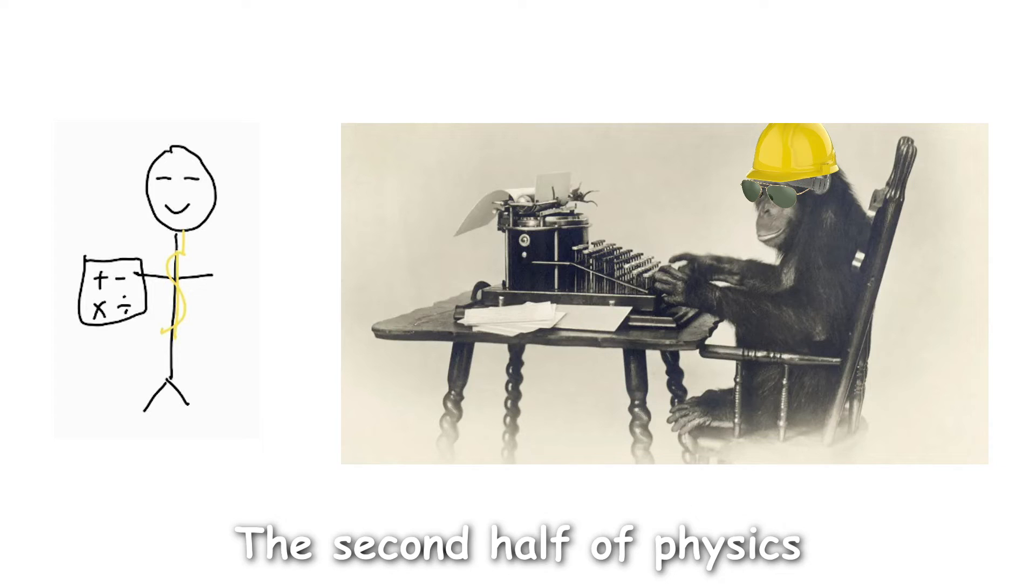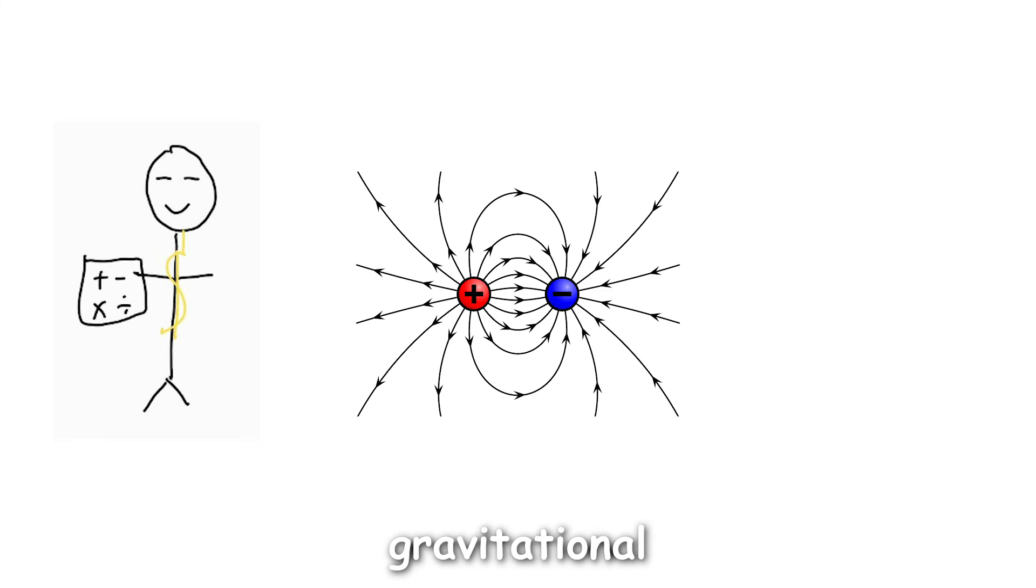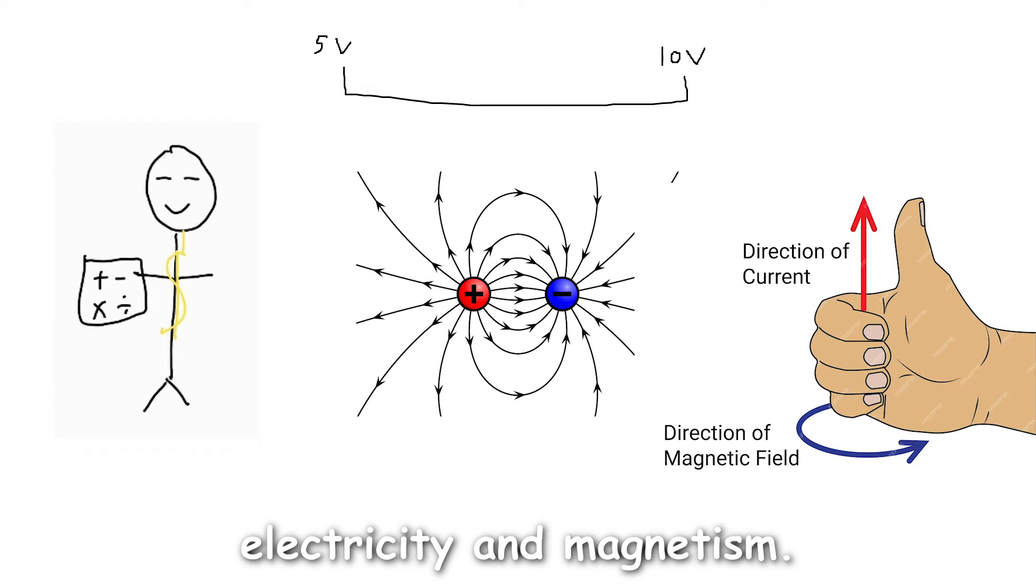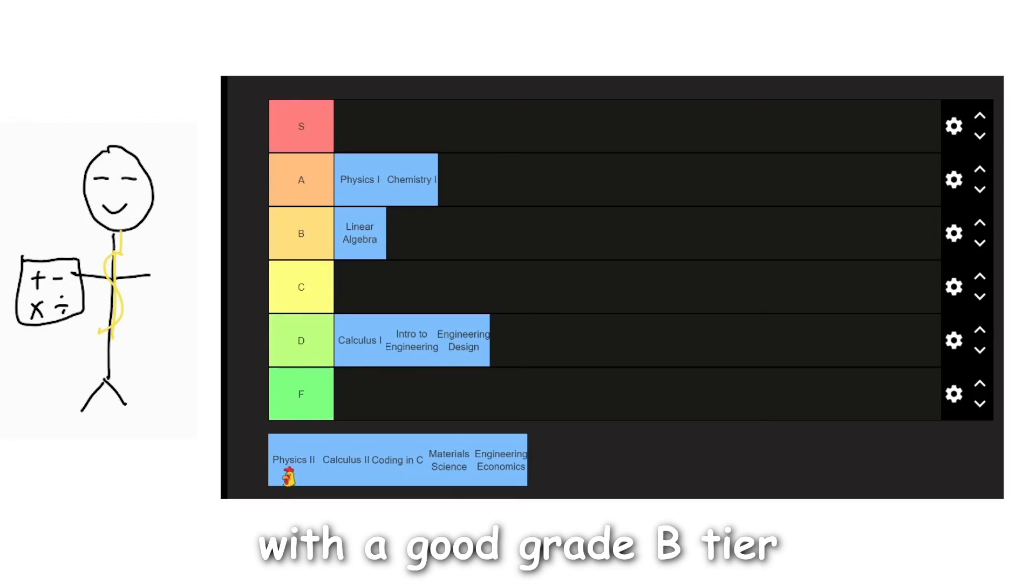The second half of Physics 2 was quite interesting, and I did enjoy it. The second half was all about gravitational and electric fields, electric potential, electricity, and magnetism. I found some of these concepts a little harder to grasp, but the test questions were simple enough, and if you show up to the lectures, you will pass with a good grade. B tier.